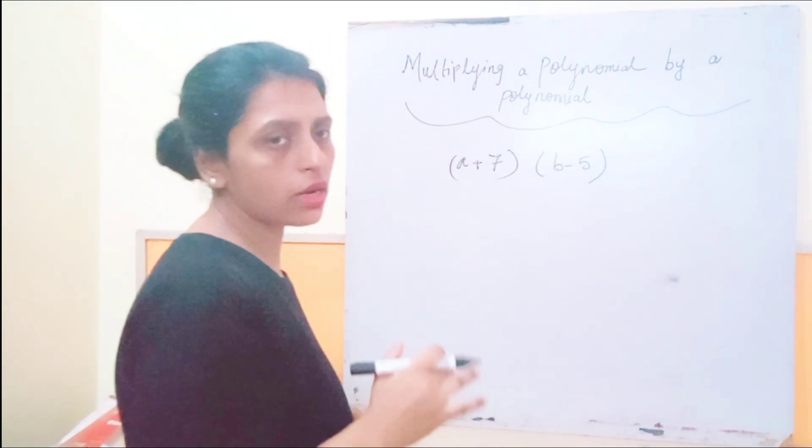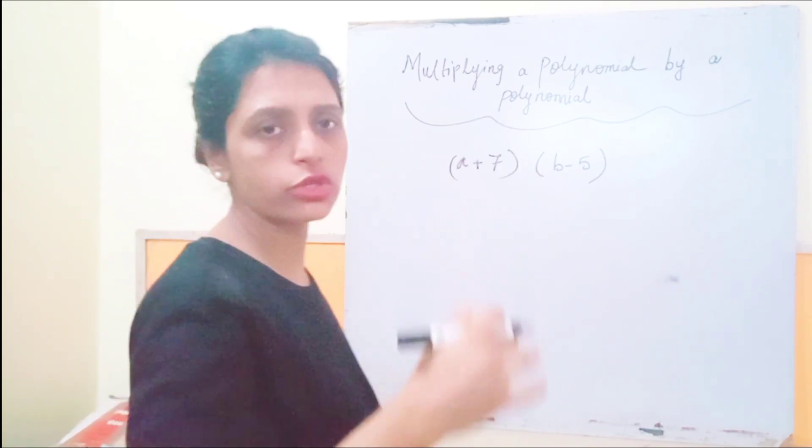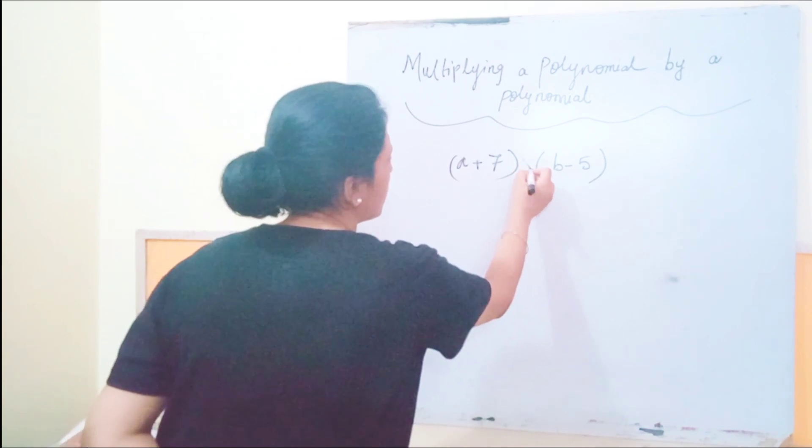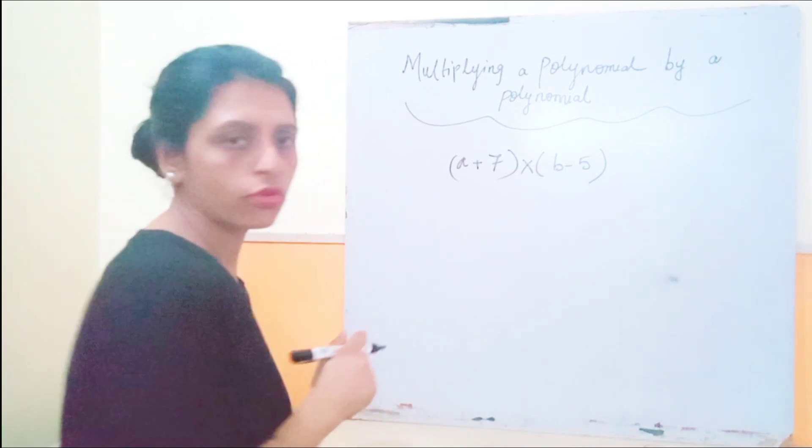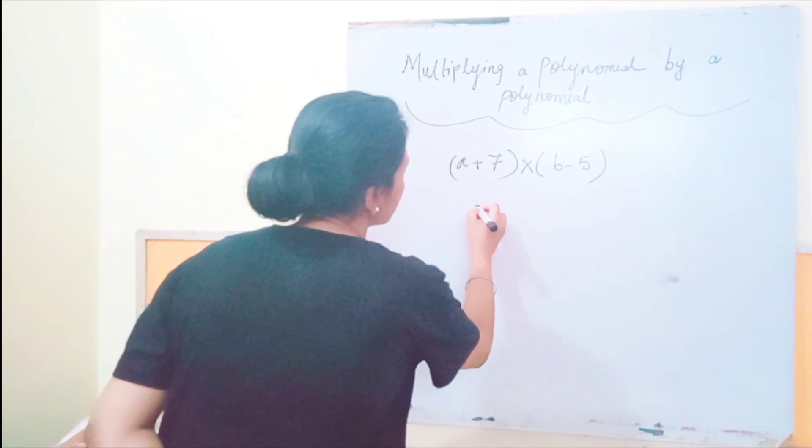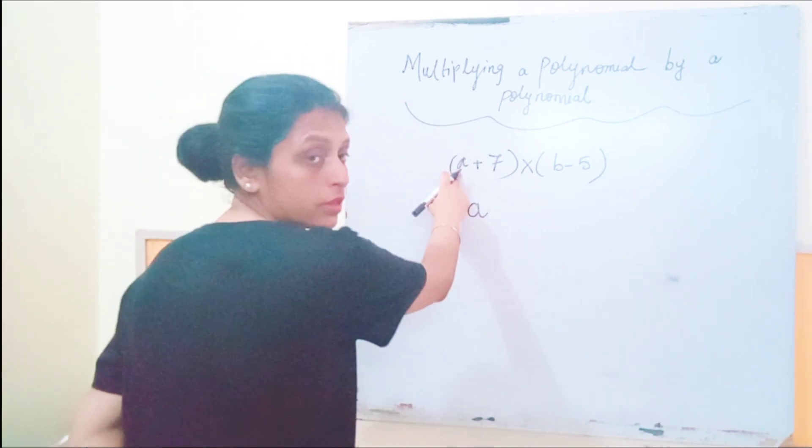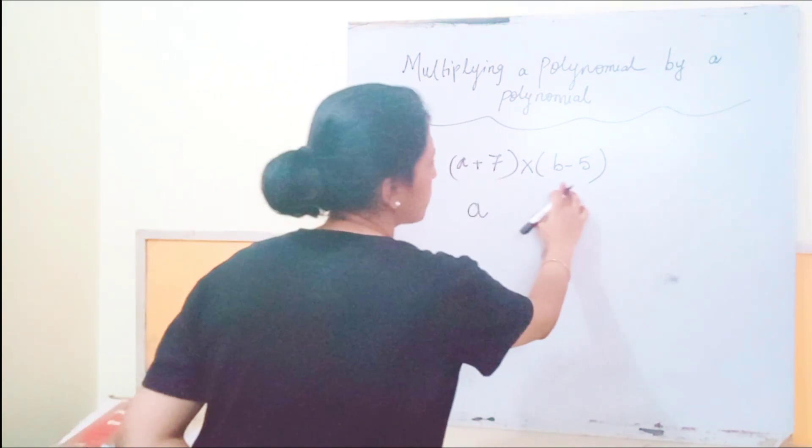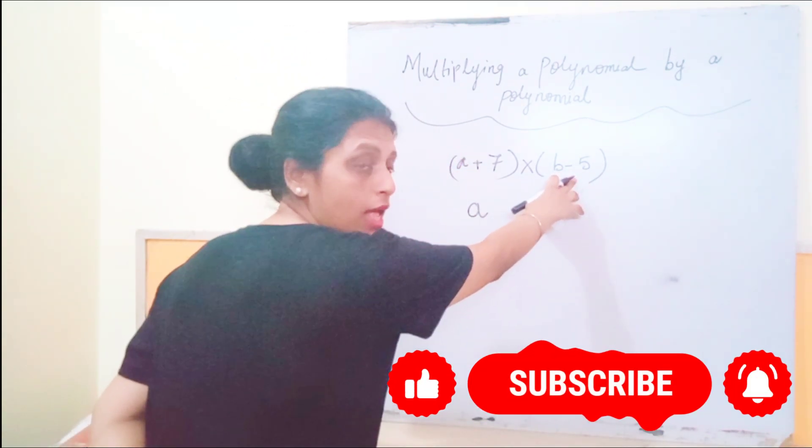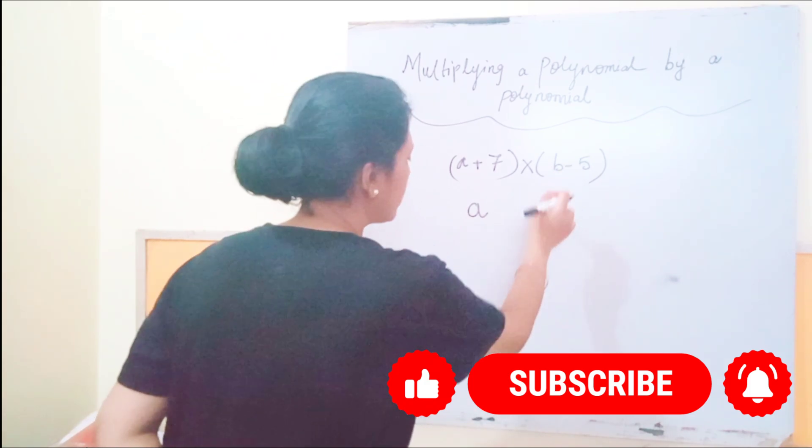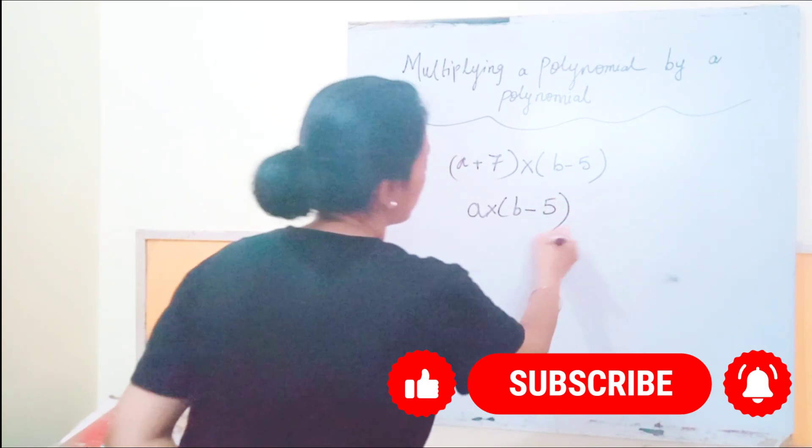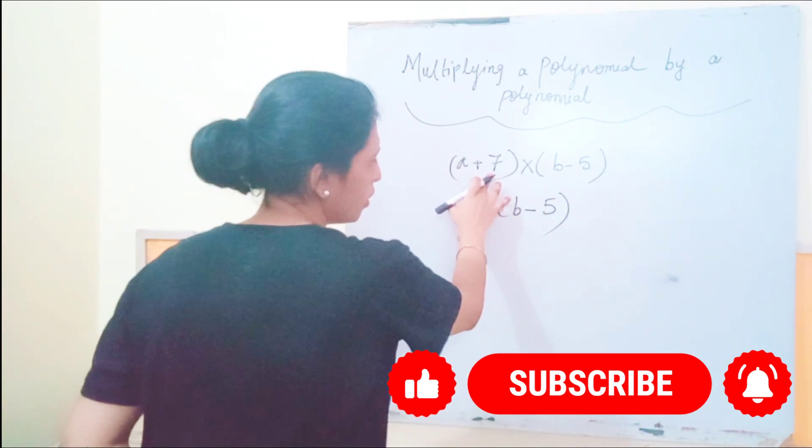So these are binomials. So how we are going to multiply two binomials? Let's see. So a plus 7 multiplied by b minus 5. Okay, so now what we will be doing: a, this a will be multiplied with both the terms of the second algebraic expression or second binomial. So a multiplied by b minus 5. Okay, similarly 7.